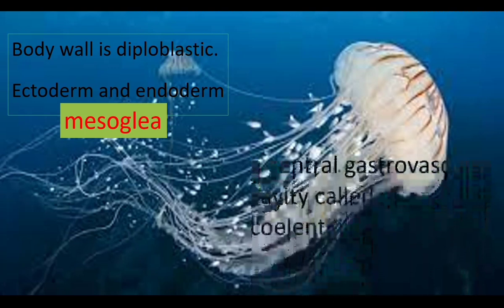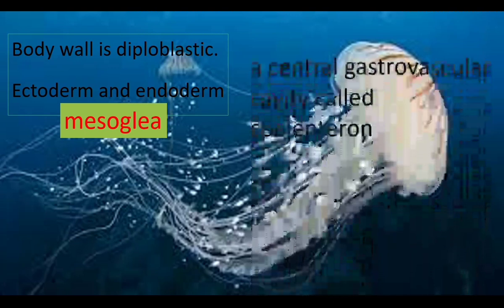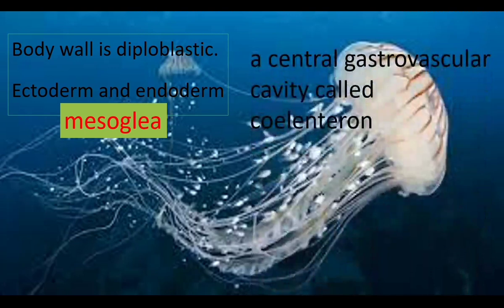At the center of the animals, there is a cavity called the gastrovascular cavity. The word gastro refers to the digestive system, and vascular means tubular. So it is a tube-like cavity that functions as the digestive system. It is also called the coelenteron — enderon means digestive system, and coelo means cavity.